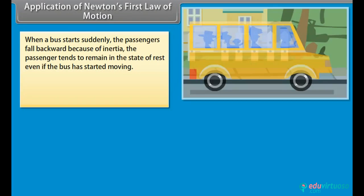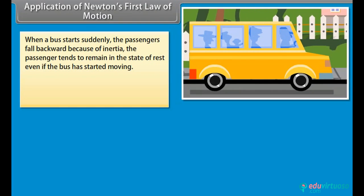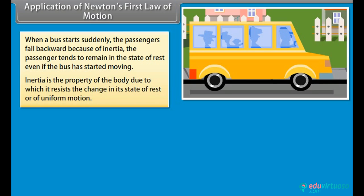Application of Newton's first law of motion. When a bus starts suddenly, the passengers fall backward because of inertia. The passenger tends to remain in the state of rest even if the bus has started moving. Inertia is the property of the body due to which it resists the change in its state of rest or of uniform motion.